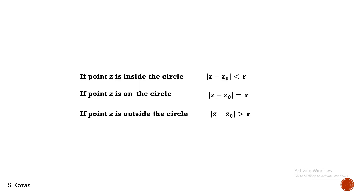In summary: if a point is inside the circle, modulus of Z minus Z₀ is less than the radius. If the point is on the circle, the distance between center and point equals the radius. If the point is outside the circle, the distance from the point to the center is greater than the radius. Using these three conditions, we are going to solve a problem.